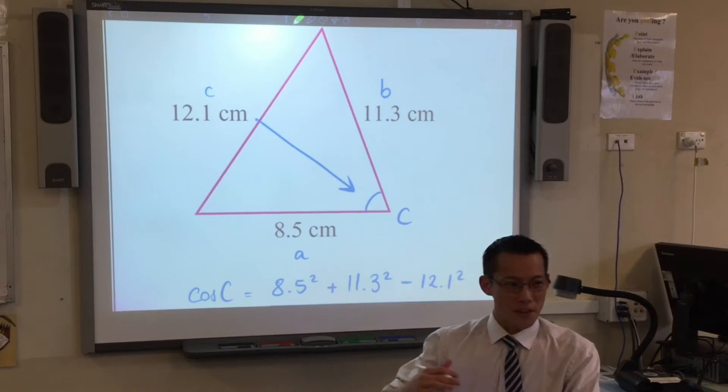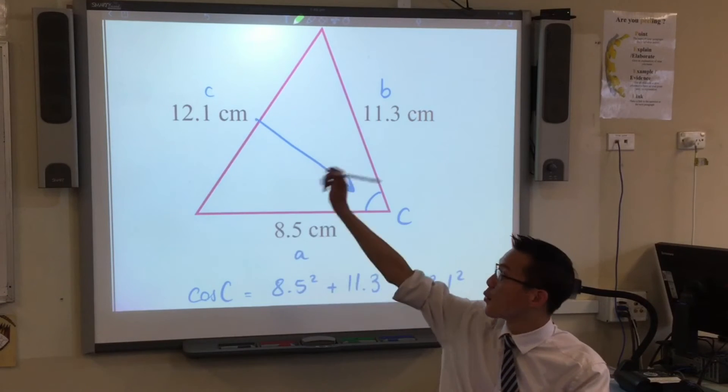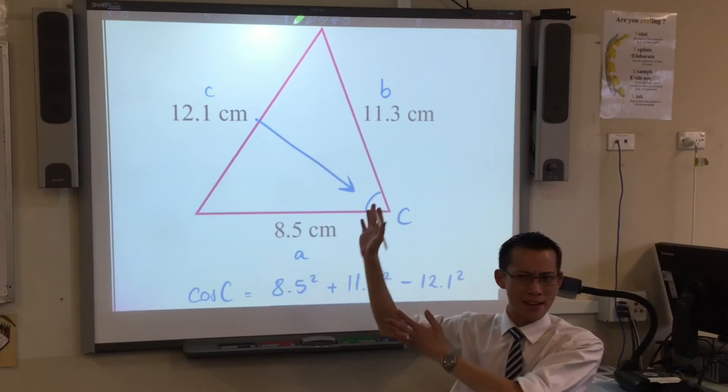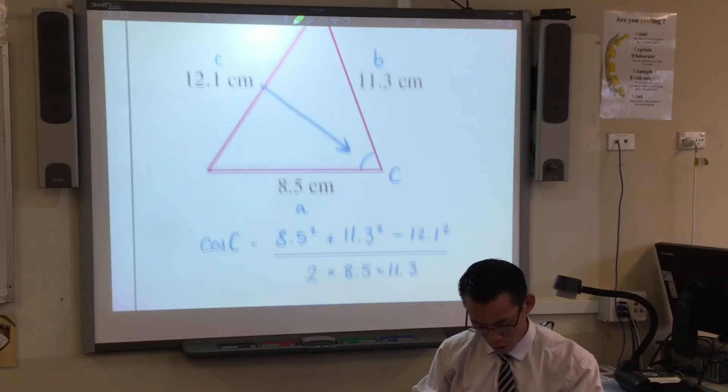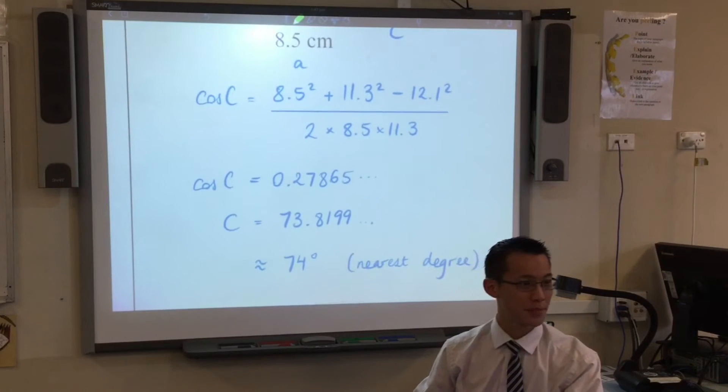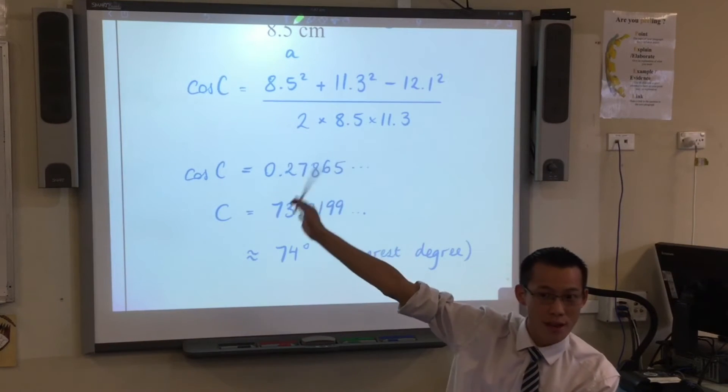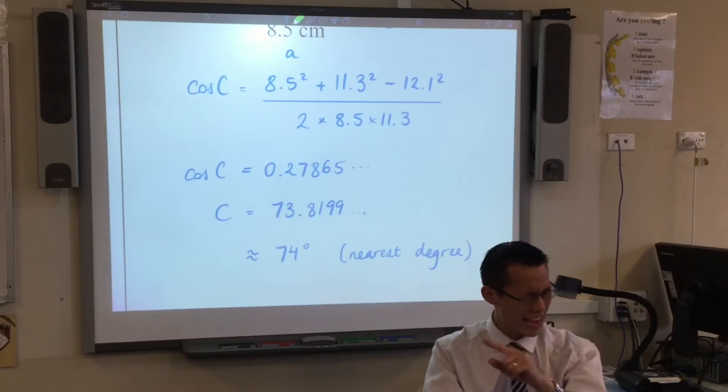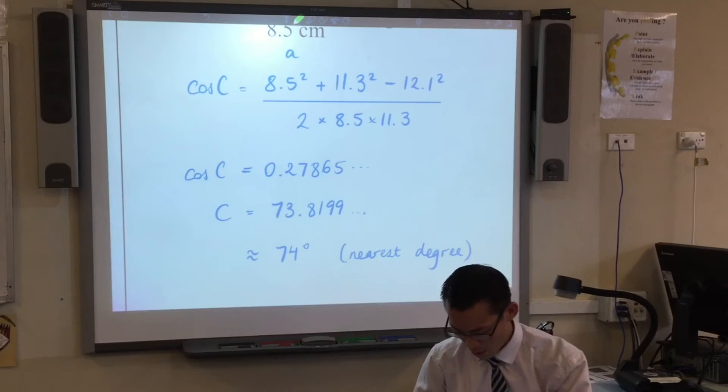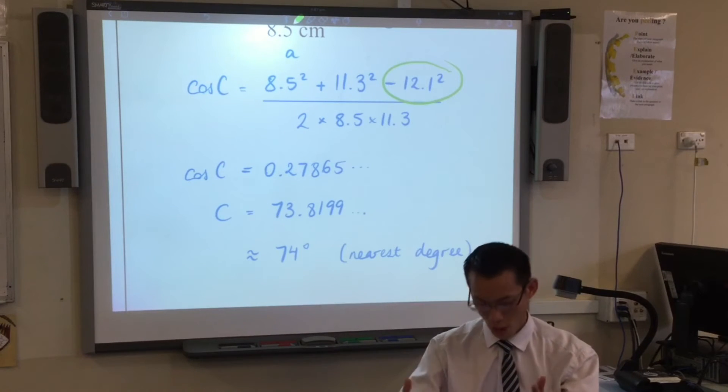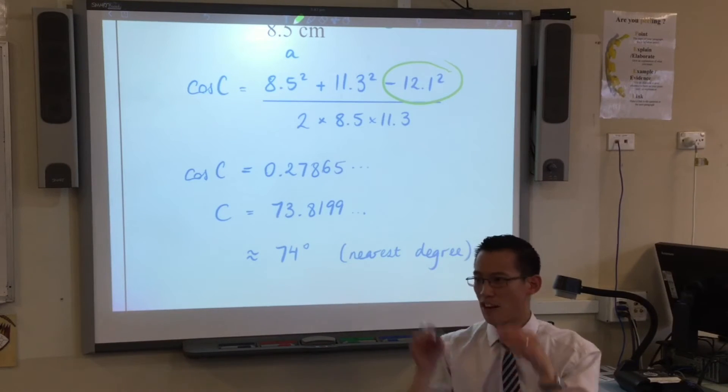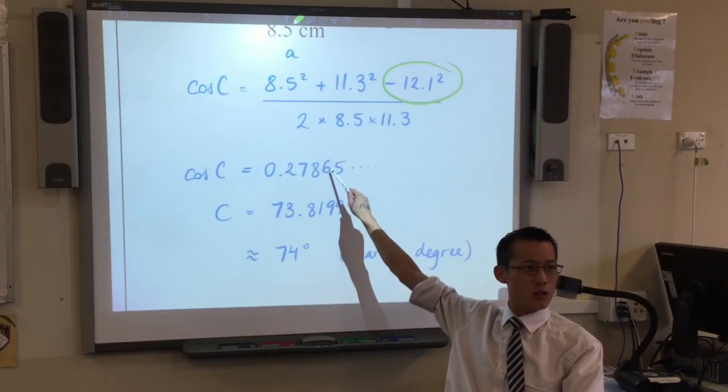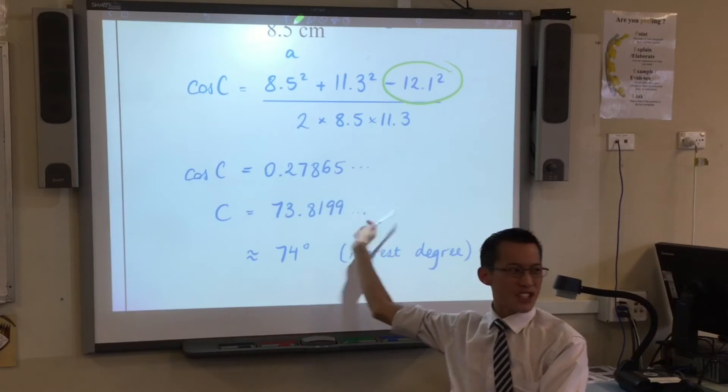And then everything else kind of fits into the spots that are left. You notice as well, I think it's helpful to have these two lines here to say, okay, I hit equals, but that's not the angle. That's cosine of the angle, right?